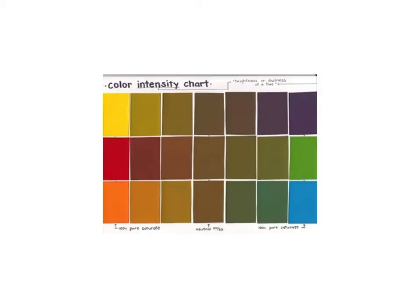Saturation refers to the intensity of a color. Saturation is different from tint and shade because we're actually bringing the color down not by using black or white, but by mixing it with another color. As part of your color wheel, you're also going to do what's called an intensity chart. You'll take each of the primary colors — red, yellow, and blue — and mix each with its complement. So yellow with purple, red with green, blue with orange. You'll mix a little bit of that complement in, working your way to a brown in the middle, starting from each side separately.